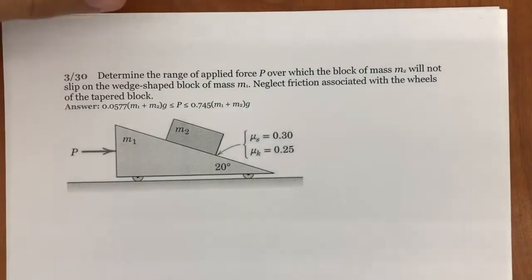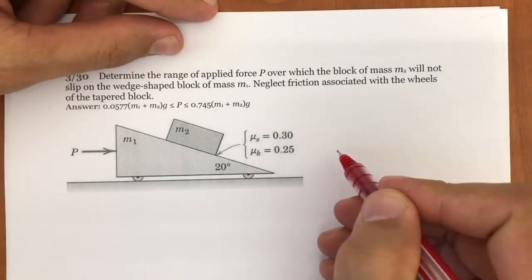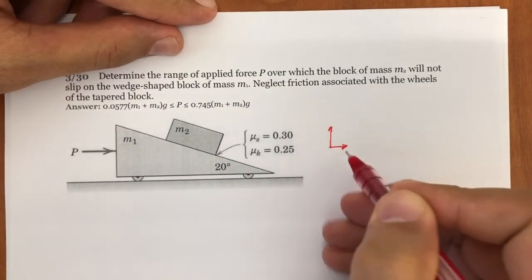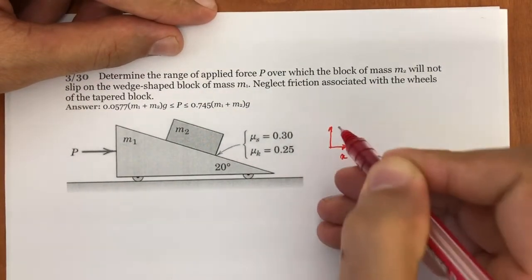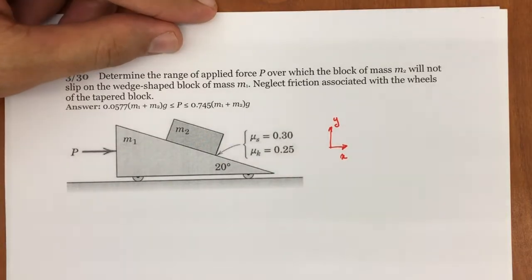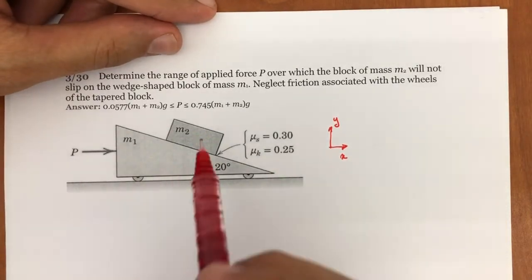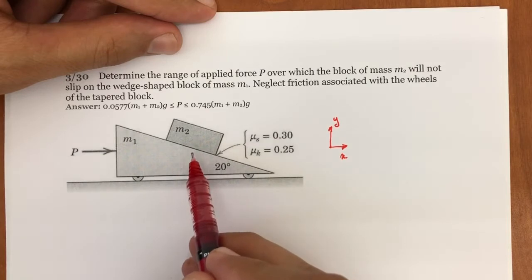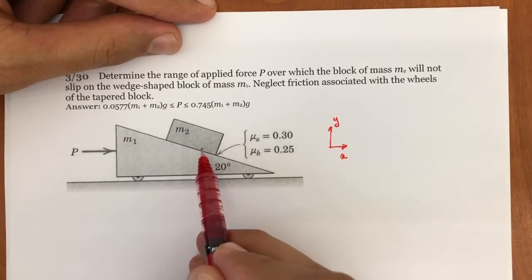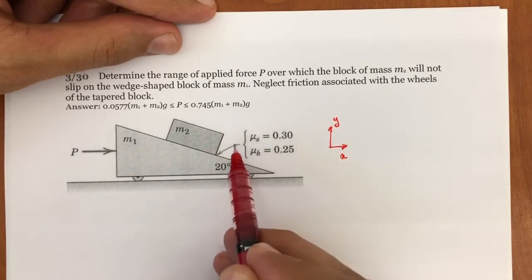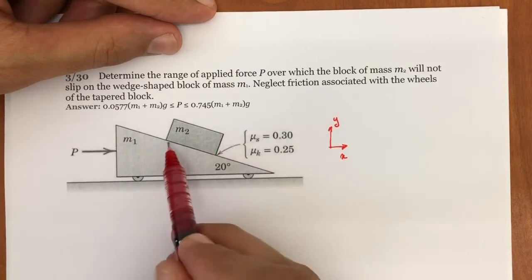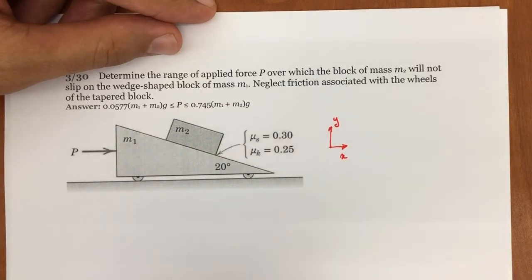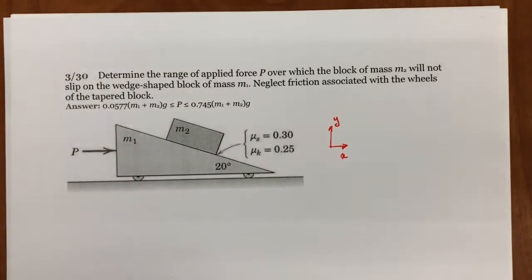First, I'm going to find the acceleration of the whole system in terms of P. Then I'm going to draw the free body diagram of M2 and see what is the relationship between that acceleration and the friction force. From there, I'm going to find the interval of P that we are trying to find.